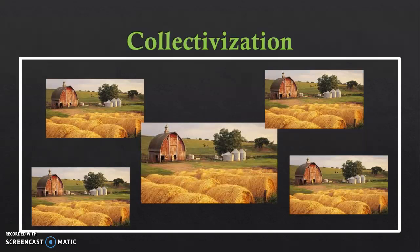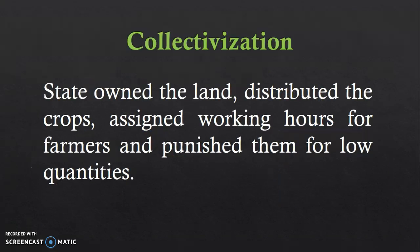Under collectivisation, this was supposed to increase the efficiency of farming. The state owned the land — previously the kulaks could own their own land, but under collectivisation Stalin made it a point for the state to own the entire land, so none of the peasants owned land any longer. The state was allowed to distribute the crops, assigned working hours for farmers, and punished them for low quantities.